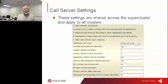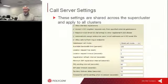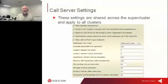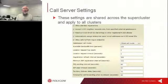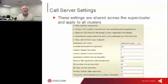Some of the things in the call server settings include gatekeeper — typically H.323 — whether we're going to run direct mode or routed mode. These are all parameters that go into the gatekeeper setup for the DMA, along with potentially some of the SIP setup information that might be required.